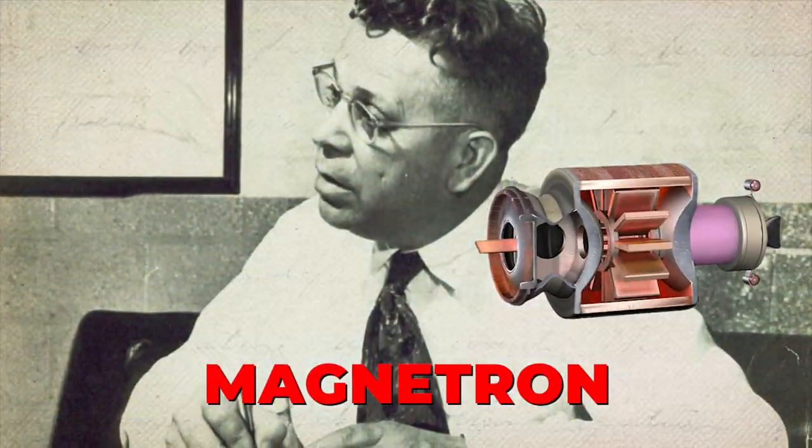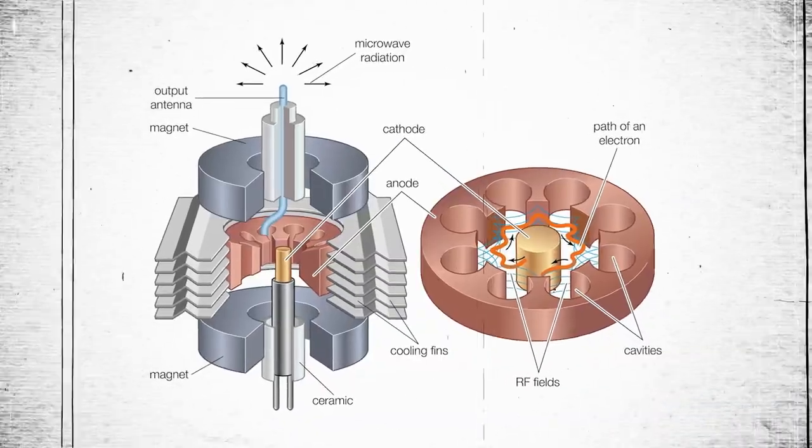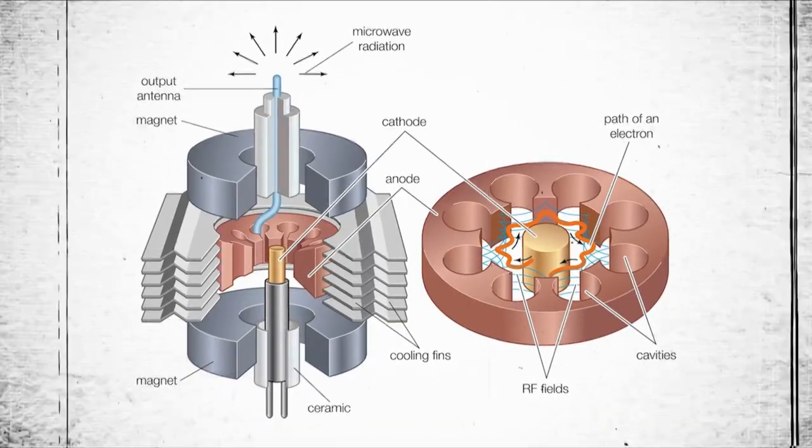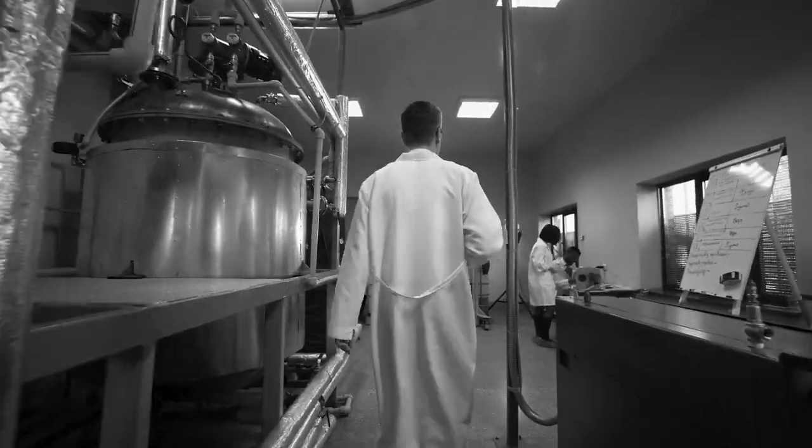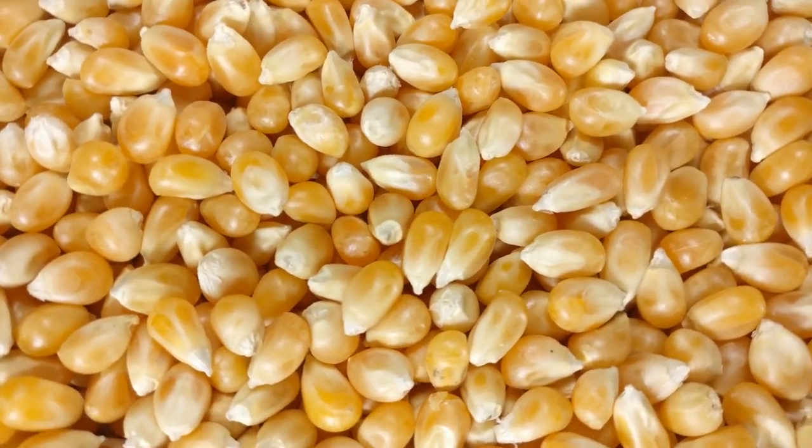This serendipitous discovery occurred in 1945 when Spencer noticed something unusual while working on a magnetron, a type of vacuum tube used to generate microwaves in radar equipment. He had a candy bar in his pocket, but as he stood near the operating magnetron, the candy bar melted. Intrigued by this, Spencer conducted further experiments, including placing popcorn kernels near the magnetron. To his amazement, the kernels popped.